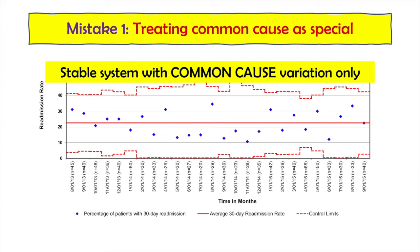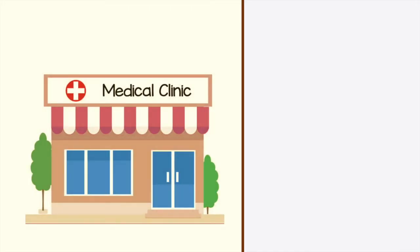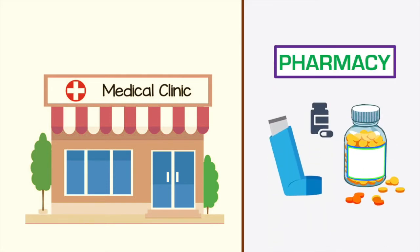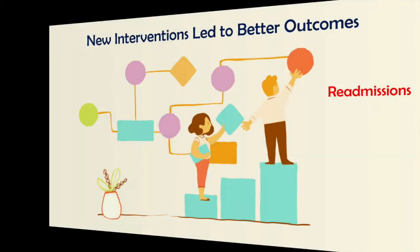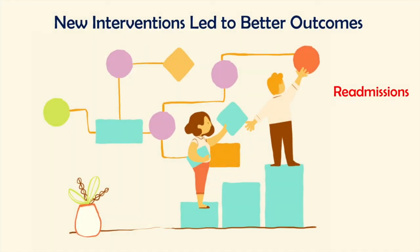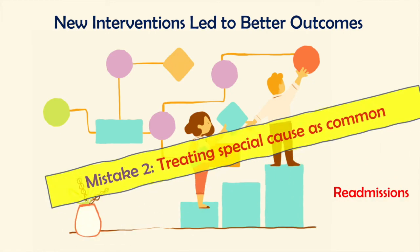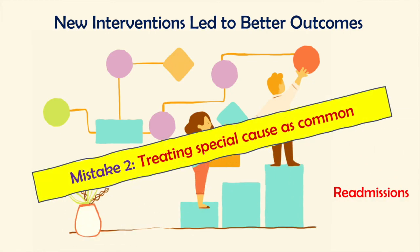Now let's say something changed in the system and actually led to a higher readmission rate. Perhaps an outpatient clinic closed and patients could not get follow-up appointments. Maybe the pharmacy switched to a different formulary. What if the team never picks up this signal and continues business as usual? They missed an opportunity to mitigate future harm. On the other hand, let's say a few staff members tried a new process of discharge transition and it led to a good special cause — but sadly, the team never identified it. An opportunity to improve was missed.